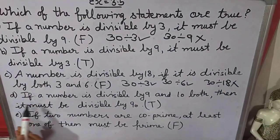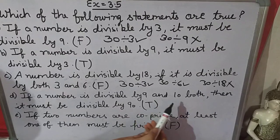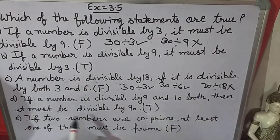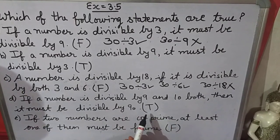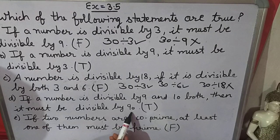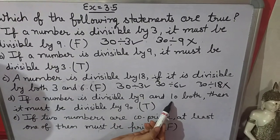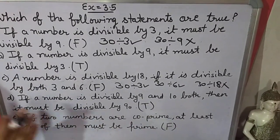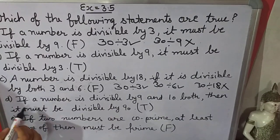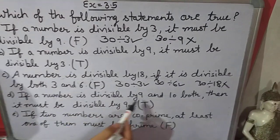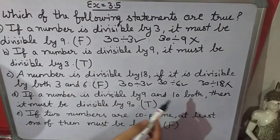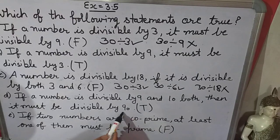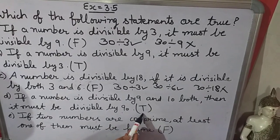Next — if a number is divisible by both 9 and 10, then it must be divisible by 90. Yes, it is true. Because 90 is the LCM of 9 and 10. This type of question we did in the previous exercise also — if a number is divisible by both numbers, then it is divisible by their LCM also. So that is true.